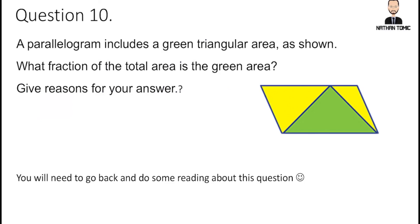Question 10 asks you to look at a picture and explain how the green triangle inside the parallelogram is related to the whole parallelogram, and what fraction the triangle's area is compared to the full parallelogram area. There is a clear relationship between the area of a triangle and the area of a parallelogram. Go off and do some research to work out the answer — once you understand that relationship, this question becomes quite easy.